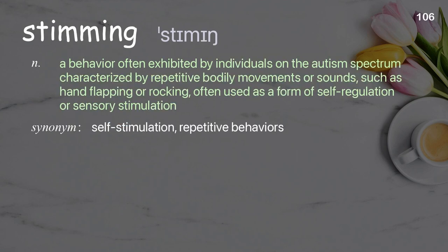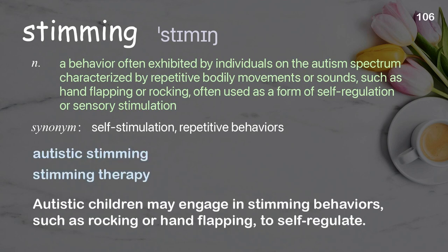Stimming: a behavior often exhibited by individuals on the autism spectrum, characterized by repetitive bodily movements or sounds, such as hand flapping or rocking, often used as a form of self-regulation or sensory stimulation. Examples: autistic stimming; stimming therapy. Autistic children may engage in stimming behaviors, such as rocking or hand flapping, to self-regulate.